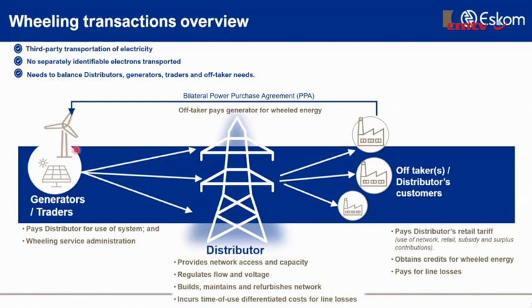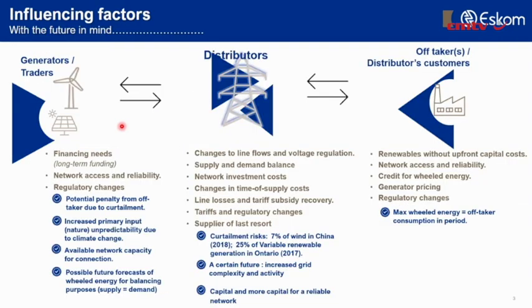Importantly, the generator — before building the power station — is able to sign up a wheeling contract with end customers, which can then be shown to a bank to get the financing and capital needed to put up the generating plant. So those are the key transactions and issues around wheeling.